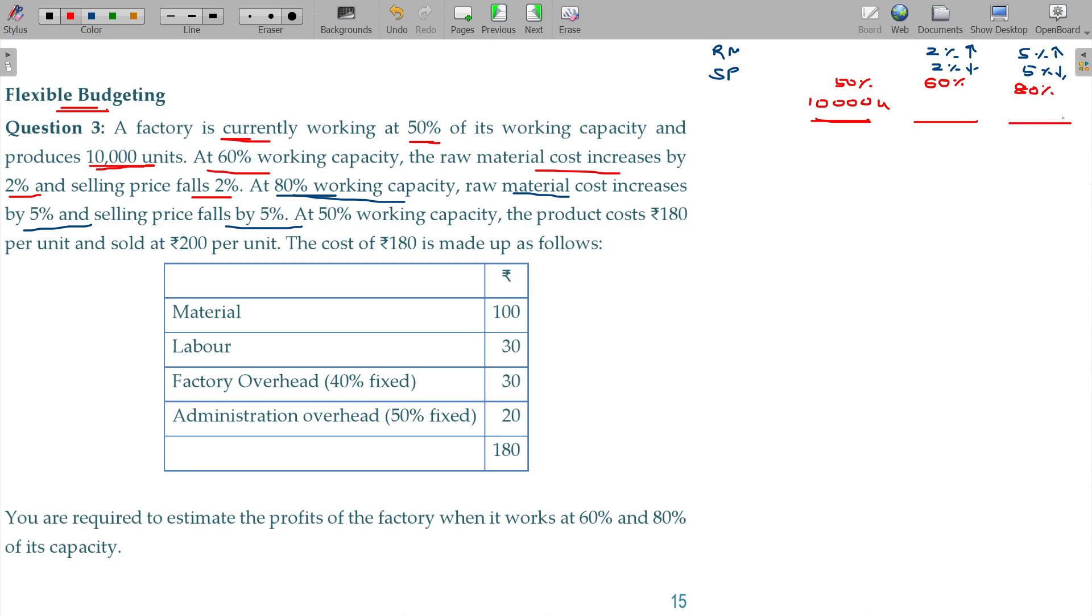You know that 50% is 10,000 units. You can do the cross multiplication. 10,000 into 60 by 50 puts them at 12,000 units. Otherwise 80% is 16,000 units. Now you have to find out what is the cost for this range.